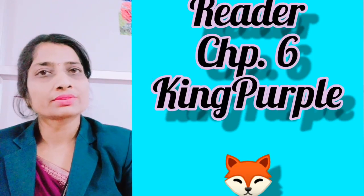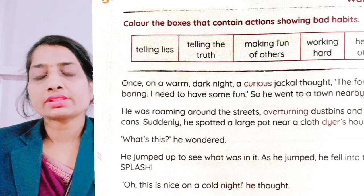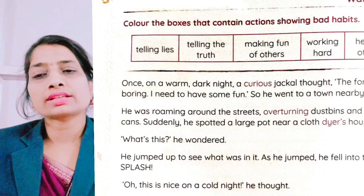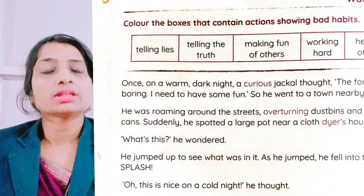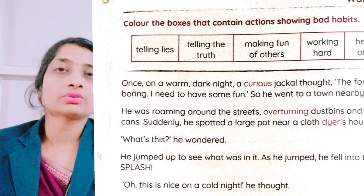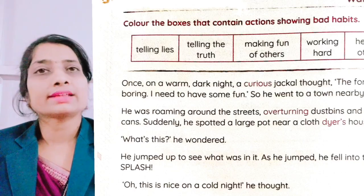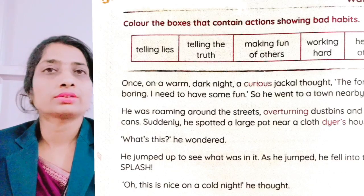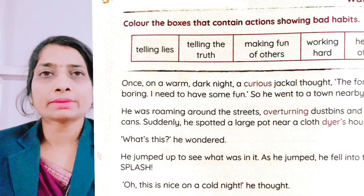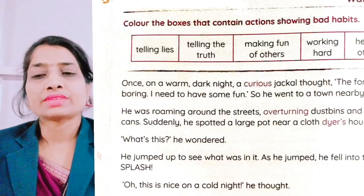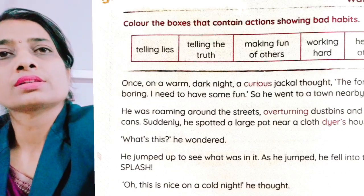First of all, there is an activity. We have to color the boxes that contain actions showing bad habits. Some bad habits and some good habits are mentioned. Telling lies — jhoot bolna — is that a good habit or a bad habit? Yes, definitely it is a bad habit, so we will color it.